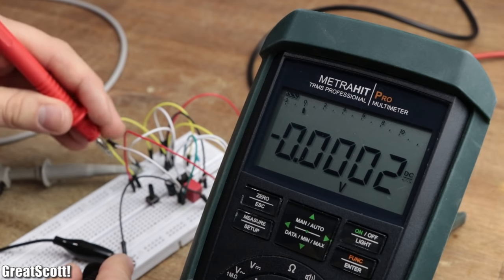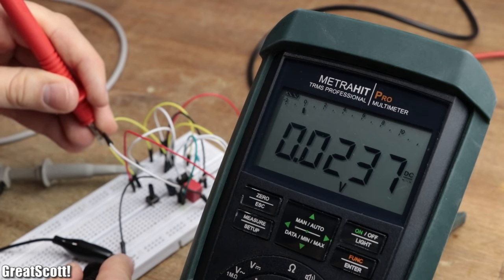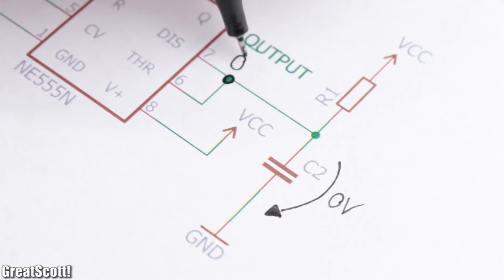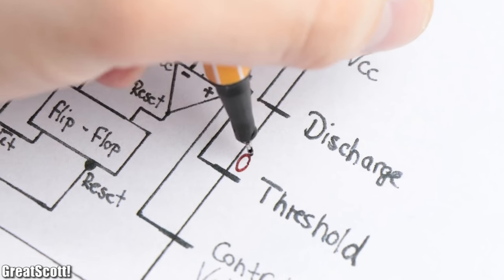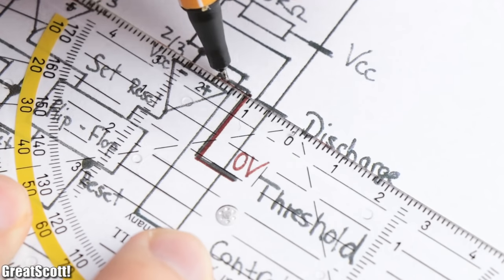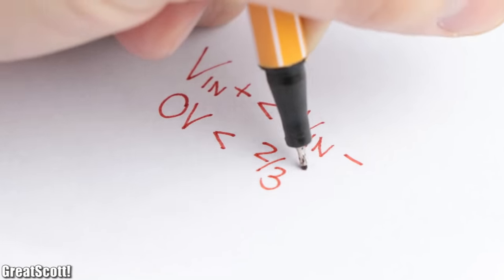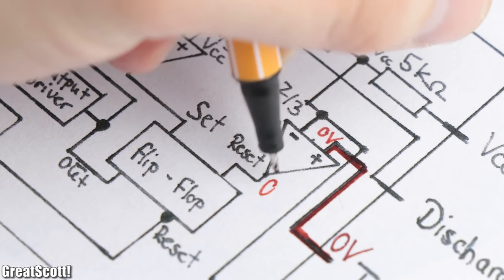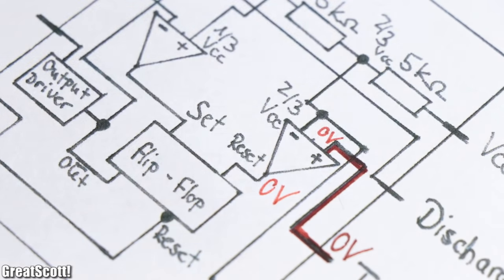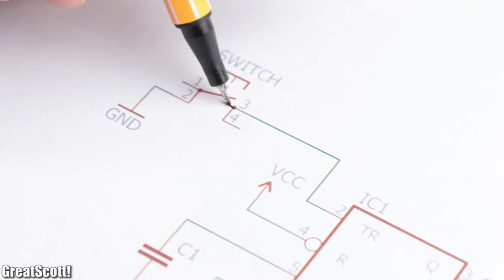In the beginning the capacitor is discharged, so there's a zero volt potential at pin 6 and 7. Pin 6 provides this ground potential for the positive input of the second comparator. Since the positive input is lower than the negative one, the output stays low and nothing happens. What we need is a push of a button at pin 2, which thus connects it to ground.